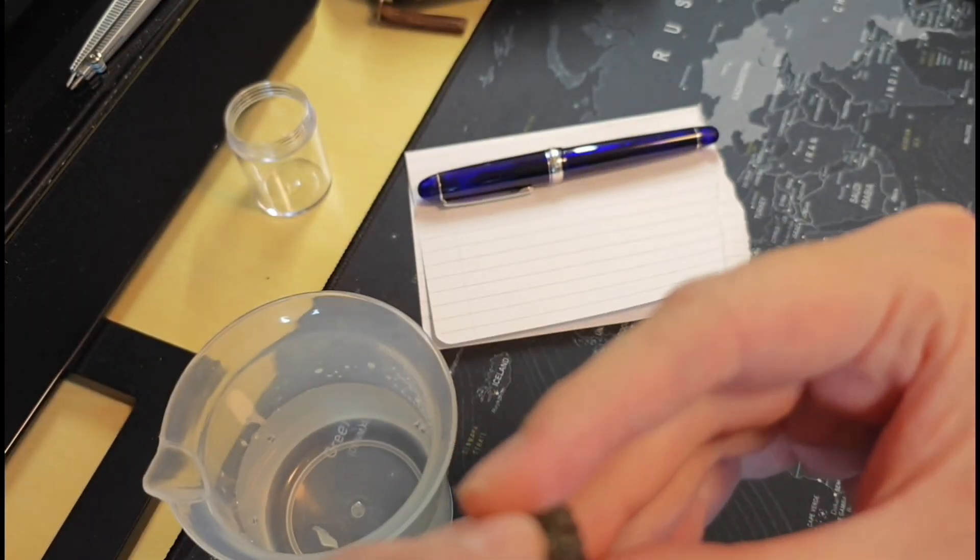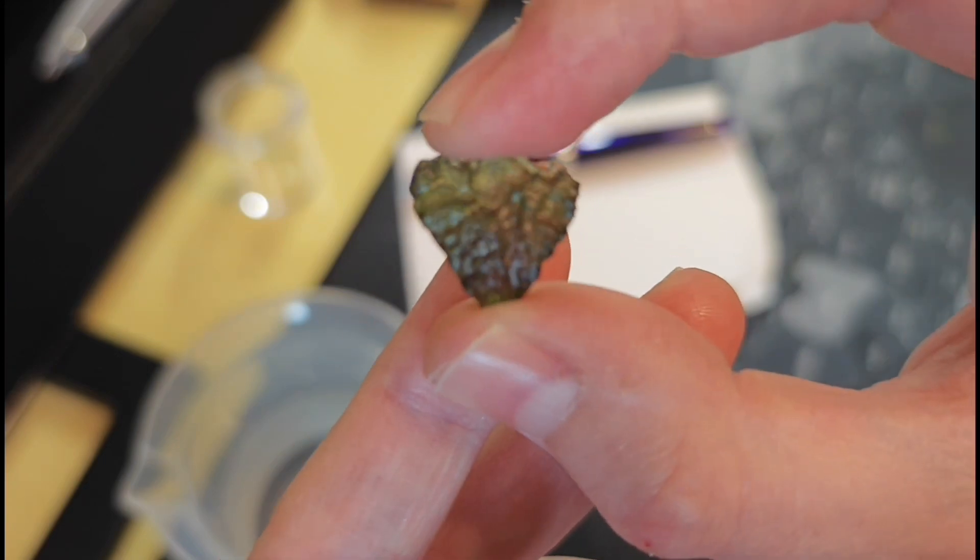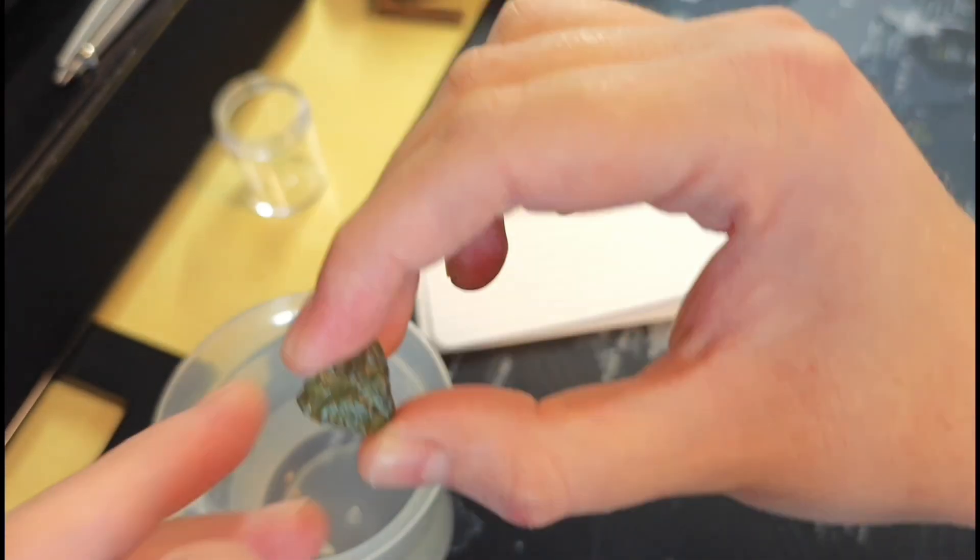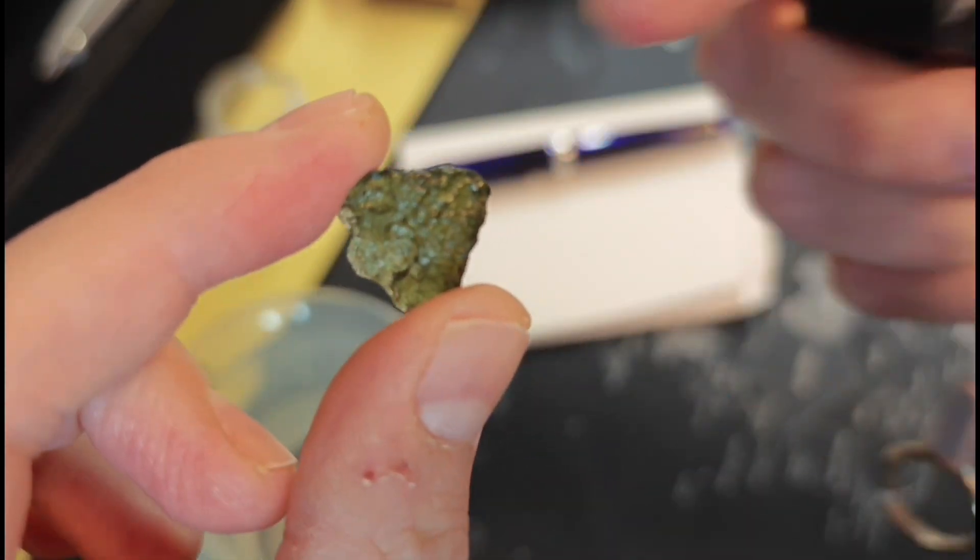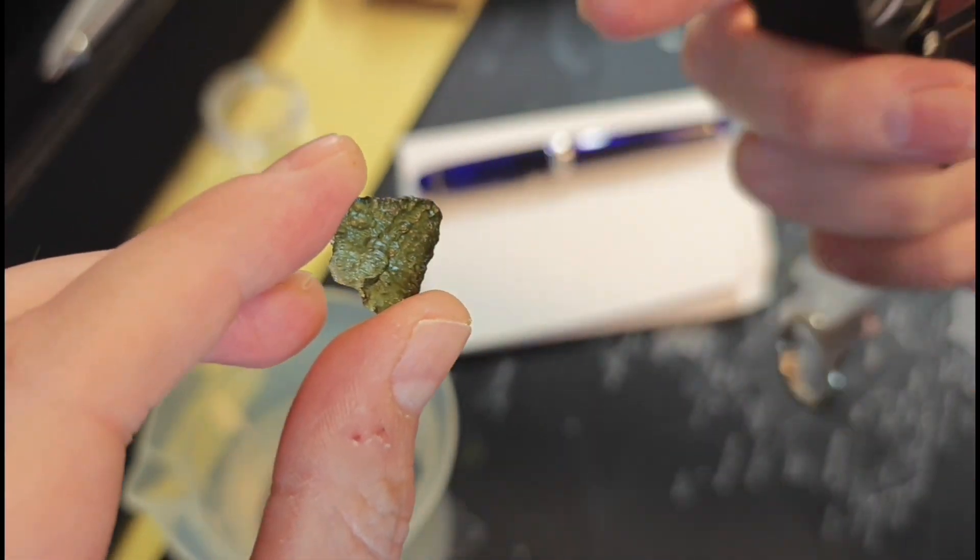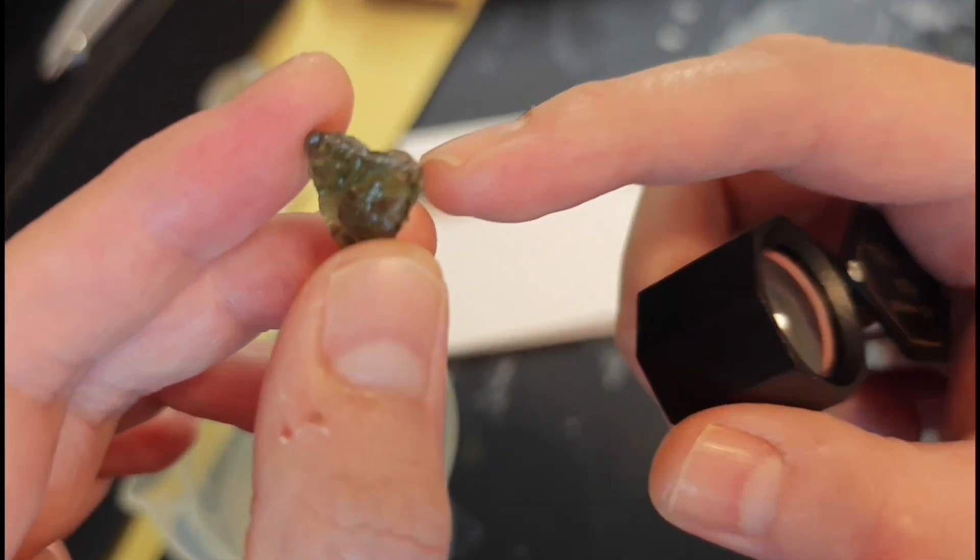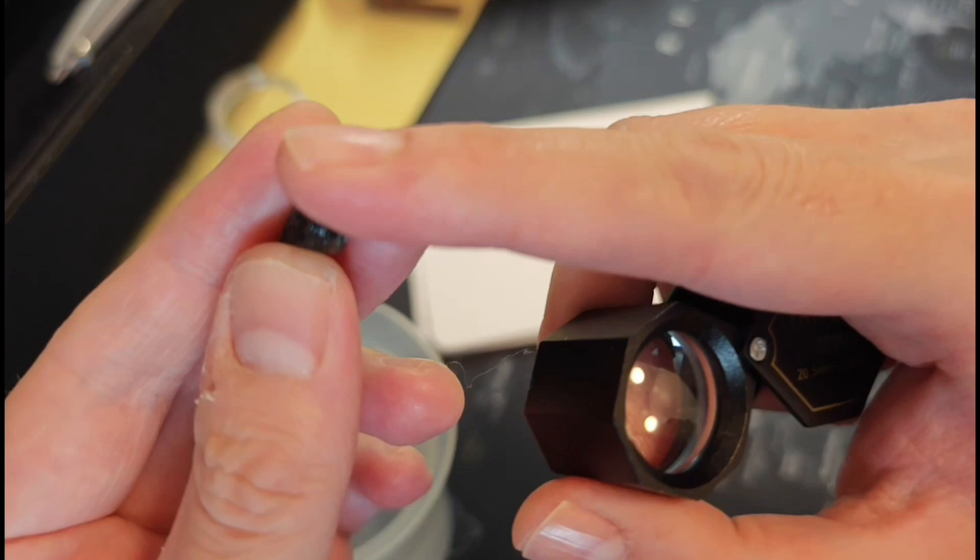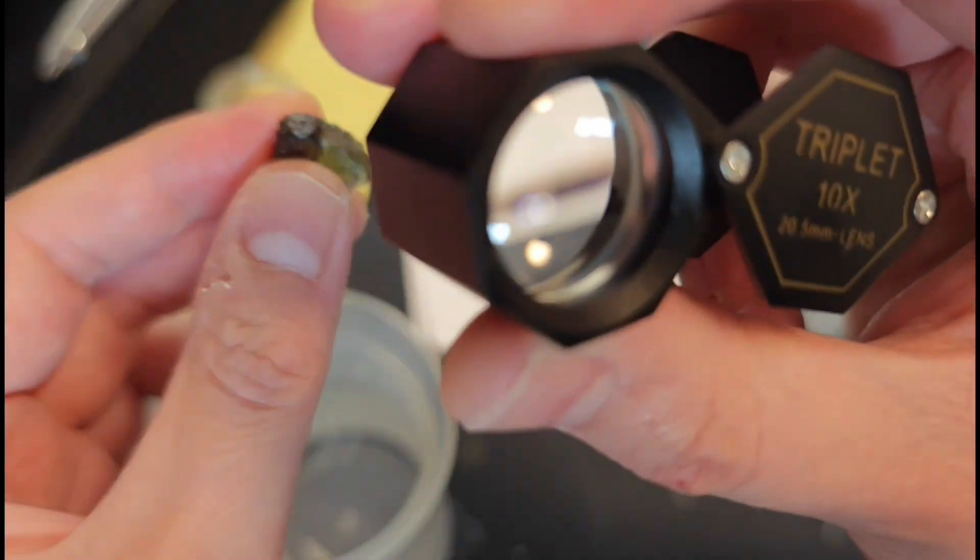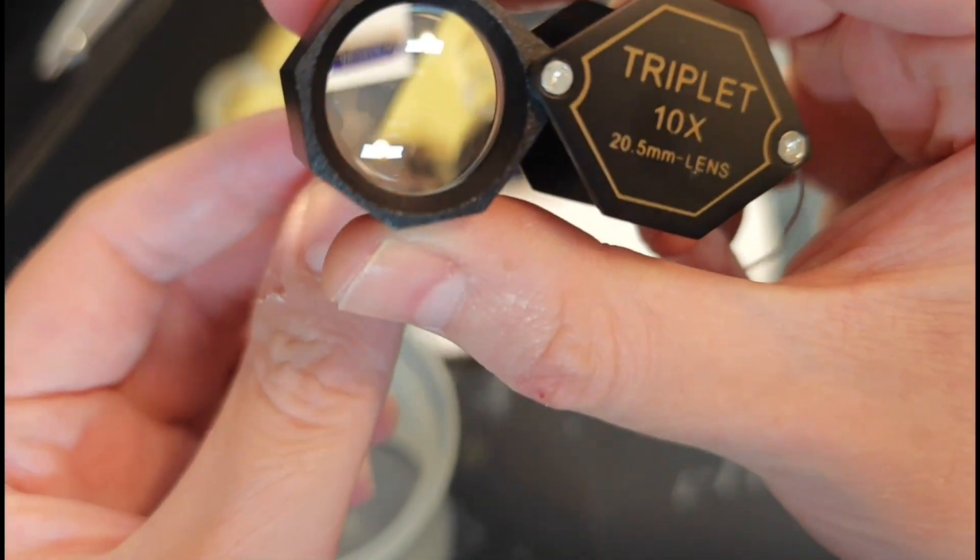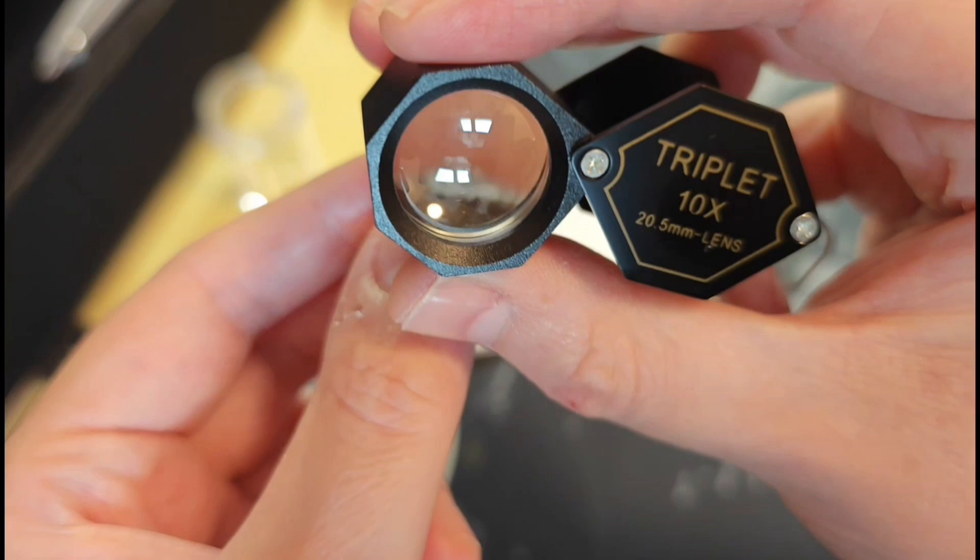The first thing that I can recommend you to do is you take your piece of Moldavite and you're going to dip it in some water. And then when it's wet it has a higher transparency. This way you can look through the stone without it having to be cut or faceted. But if you have a broken stone that has a really smooth piece, all you do is you dip it in some water, you use the loupe.